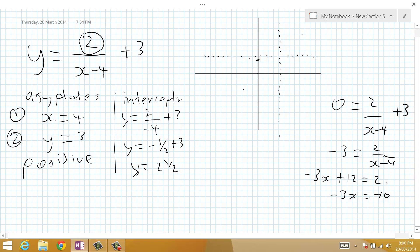Divide by negative 3 both sides. We end up with positive 3 and a third. So it cuts the x-axis approximately there.